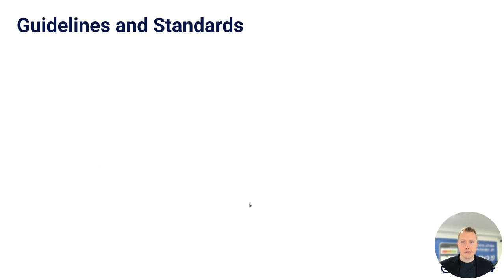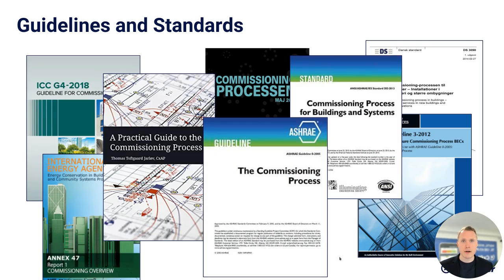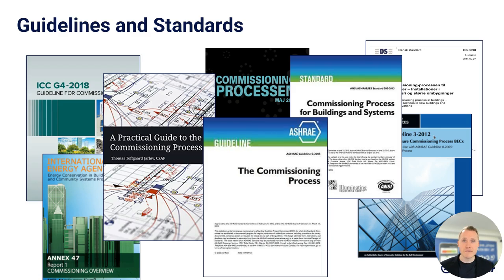Regarding the guidelines and standards, just a couple of them are available around the Internet, and most of them are paid guidelines. The main elements when we talk about commissioning globally are the ASHRAE Guideline and the ASHRAE Standard. There are also a lot of different sub-guidelines and standards for different regions and different states in the U.S. Some guidelines focus on different aspects — for example, the NIBS Guideline 3, which is for Building Envelope Commissioning. You can find links to all of them on our Commissioning 101 page.